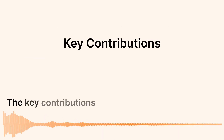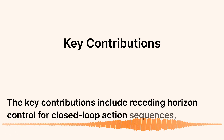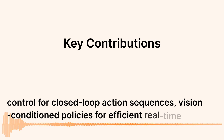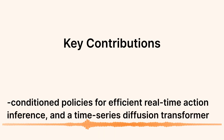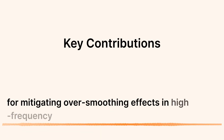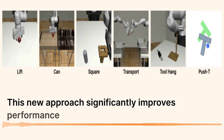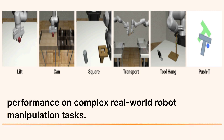The key contributions include receding horizon control for closed-loop action sequences, vision-conditioned policies for efficient real-time action inference, and a time-series diffusion transformer for mitigating over-smoothing effects in high-frequency actions. This new approach significantly improves performance on complex real-world robot manipulation tasks.